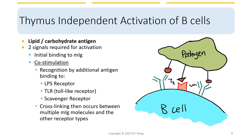After these two stimulations happen — the stimulation of membrane-bound immunoglobulins in addition to other pattern recognition receptors located on the B cells — some cross-linking will happen. The cross-linking will form between multiple membrane-bound immunoglobulin molecules and other receptors. That is the process leading to thymus-independent activation of B cells.